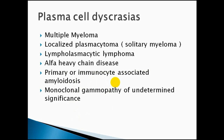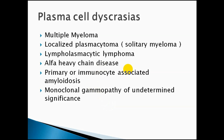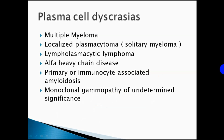Monoclonal gammopathy of undetermined significance, or MGUS, is like a pre-condition before multiple myeloma. The similarity between these two conditions is that both have elevated levels of M protein, which is a mixture of IgA and IgG. The difference is that in MGUS you only see elevated serum levels, whereas in multiple myeloma there are clinical pictures and manifestations of this protein elevation.